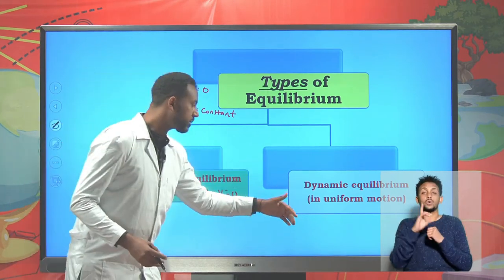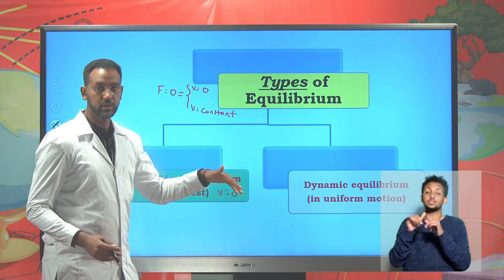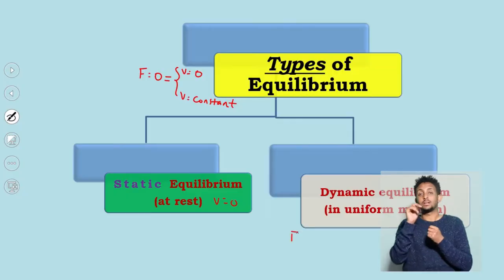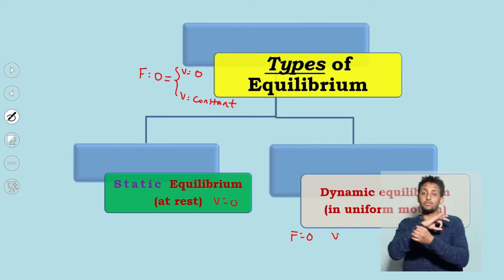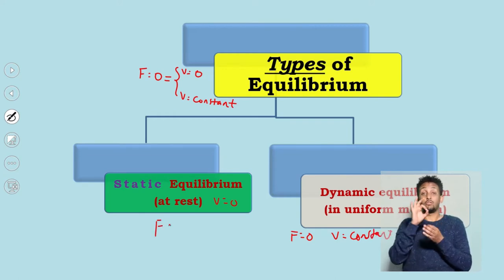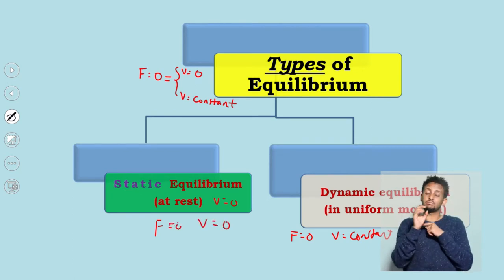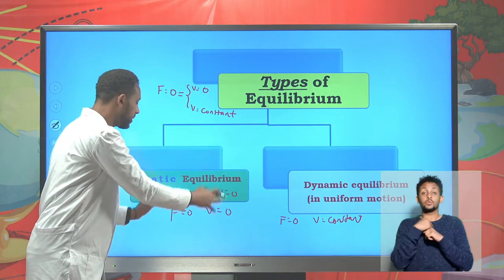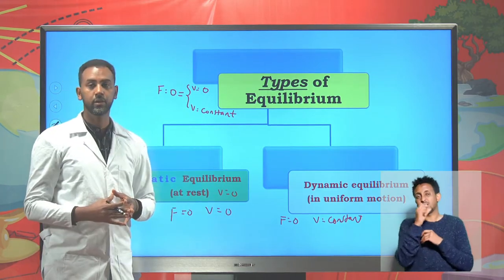In dynamic equilibrium, the object has uniform motion but the net force can still be zero — it is zero because the velocity is constant. In static equilibrium, the net force is zero because the velocity of the object is zero, meaning the object is at rest. In this unit, we are dealing only with static equilibrium. At other levels, such as in engineering, you might study dynamic equilibrium.